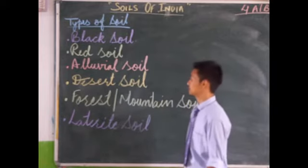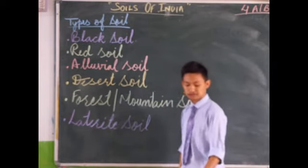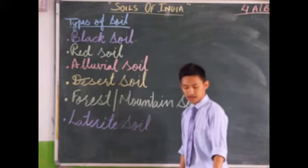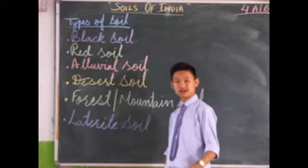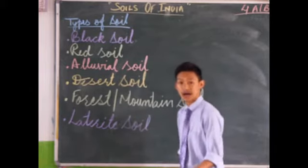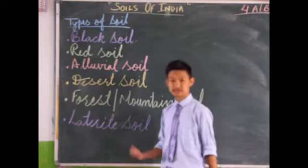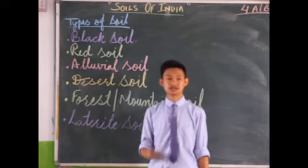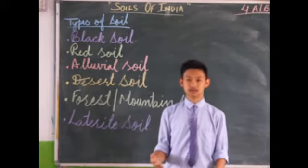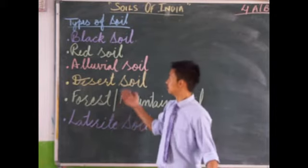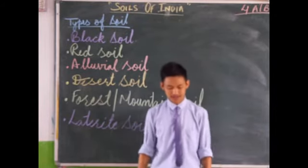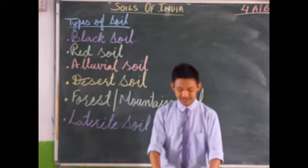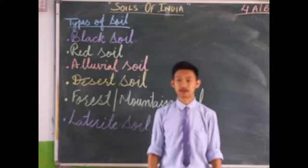Next is red soil. This soil is mostly found in the southern plateau region. Red soil contains iron, which gives it its red color. It is formed by the breaking of igneous or metamorphic rocks.